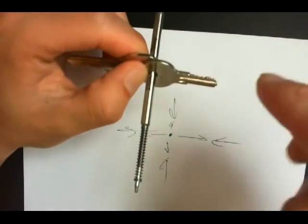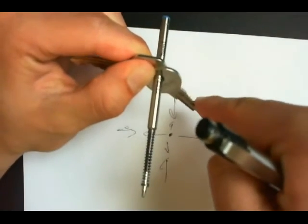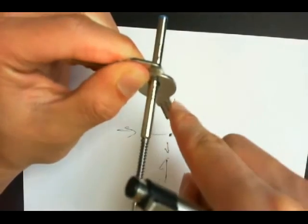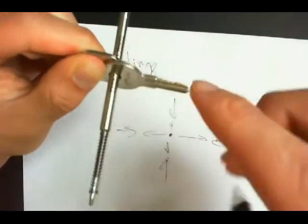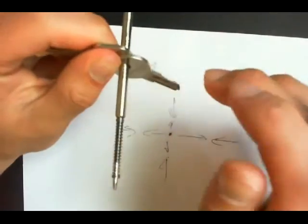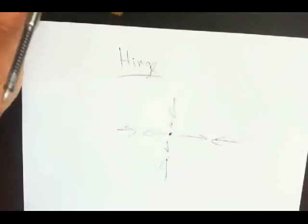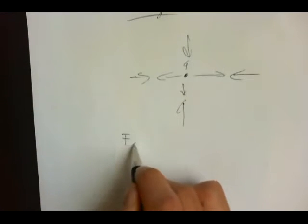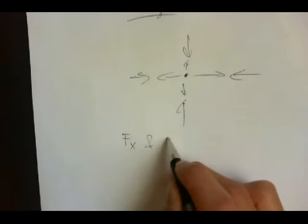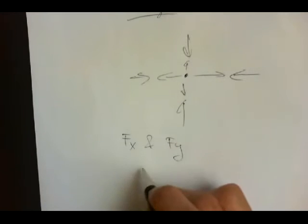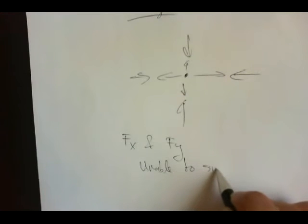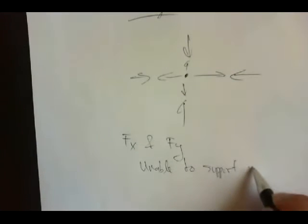However, if I apply force here, which makes the keys rotate. Since the key is rotating, this tells us that a hinge is not able to support a moment. Therefore, a hinge has two reactions, one that's horizontal and one that's vertical and is unable to support moments.